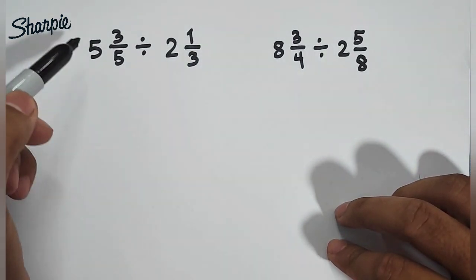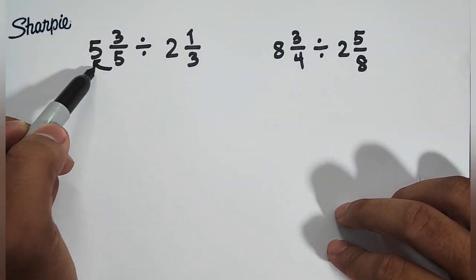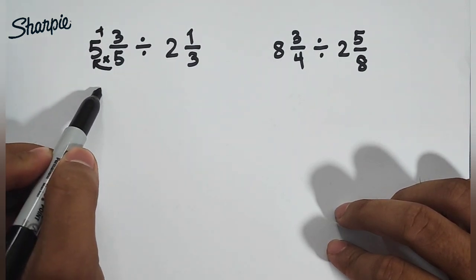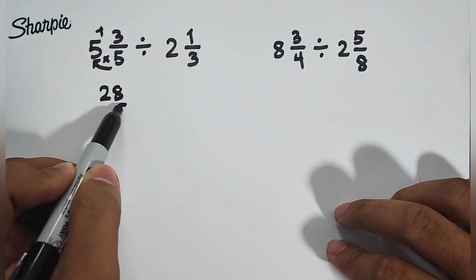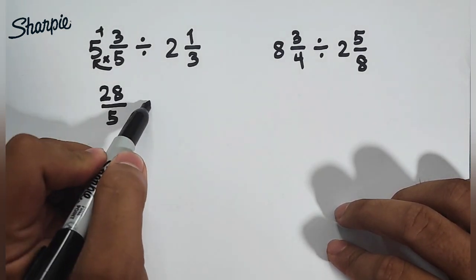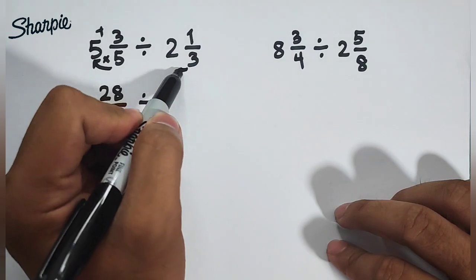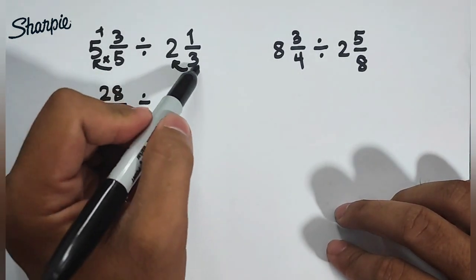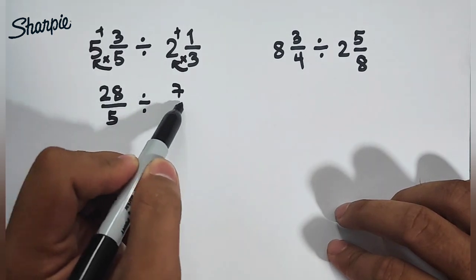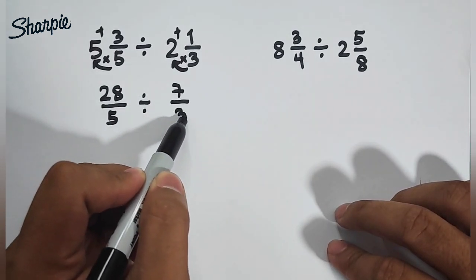Convert this into improper fraction. 5 times 5 that is 25 plus 3 that is 28 over 5. Then 3 times 2 that is 6 plus 1 that is 7 over 3.